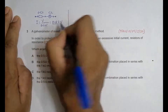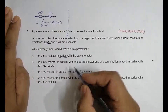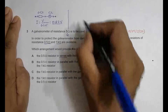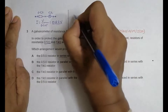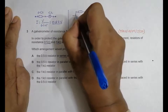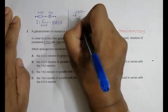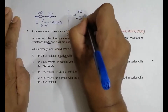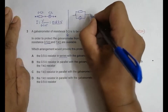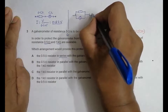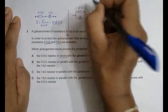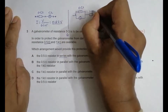In choice B, we have the 0.5 ohm resistor in parallel with the galvanometer G, and then this parallel combination is placed in series with the 1 kilo-ohm resistor. So we have 0.5 ohm in parallel with the galvanometer, and that combination in series with 1000 ohm.